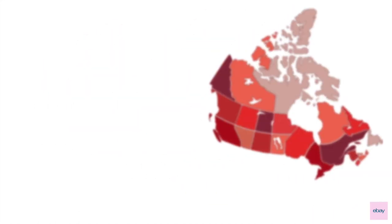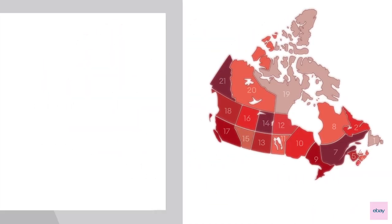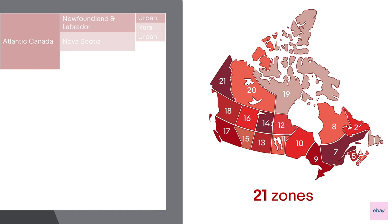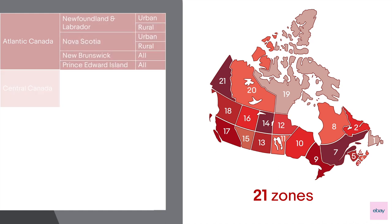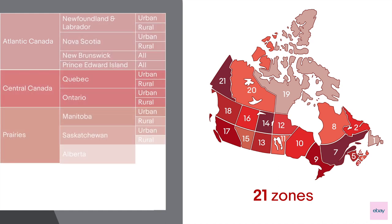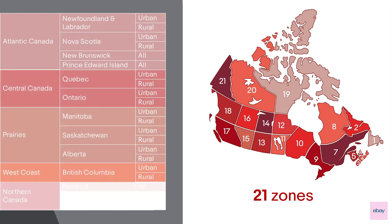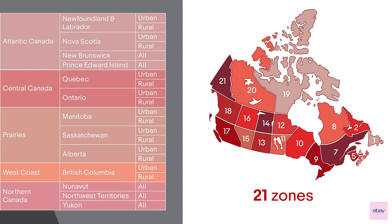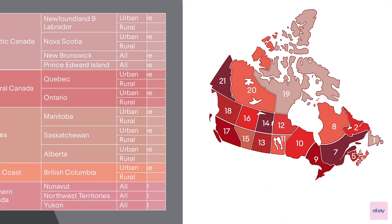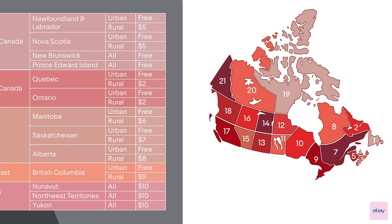In total, there are 21 zones in Canada, where you can set a shipping rate for each zone. Instead of having one shipping rate for the entire country, you can have up to 21 distinct shipping rates, and your buyers in each zone will see the corresponding shipping rate for the region that they're in.